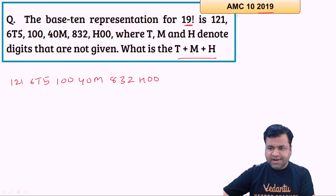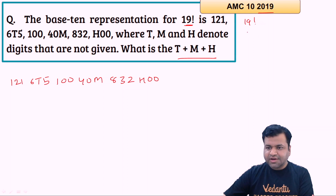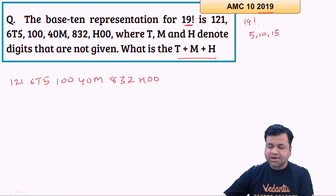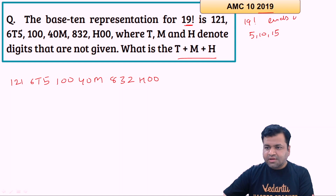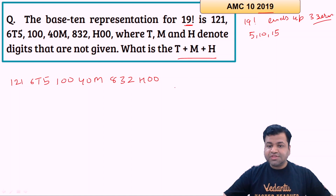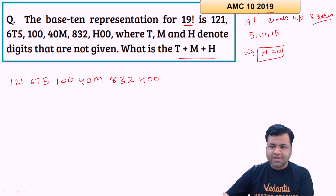First, let's find the value of h. Clearly 19 factorial has three multiples of 5 — it has 5, 10, and 15 as factors — so 19 factorial will definitely end with three zeros. That simply implies that h is zero.